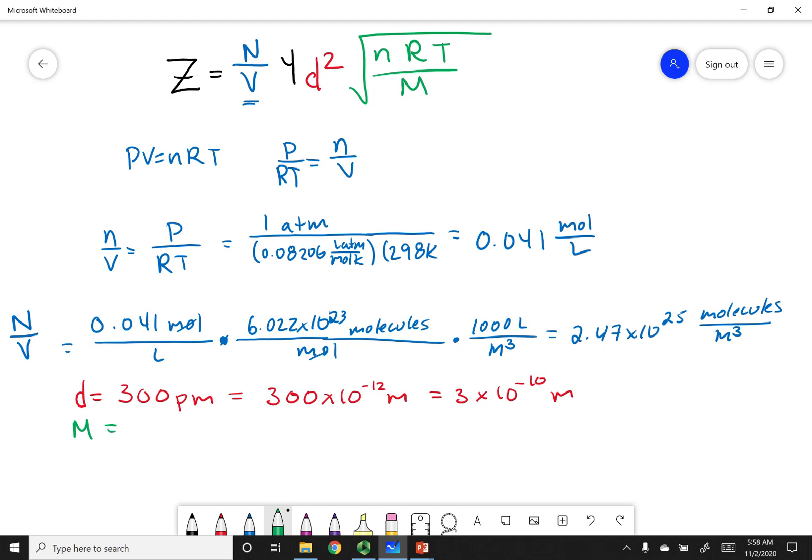For our molar mass, remember, like always, when we use these types of velocity equations, we want to make sure we put it in kilograms per mole. So an oxygen is 16.0 times 2 grams per mole, and I can calculate that out to 0.032 kilograms per mole.